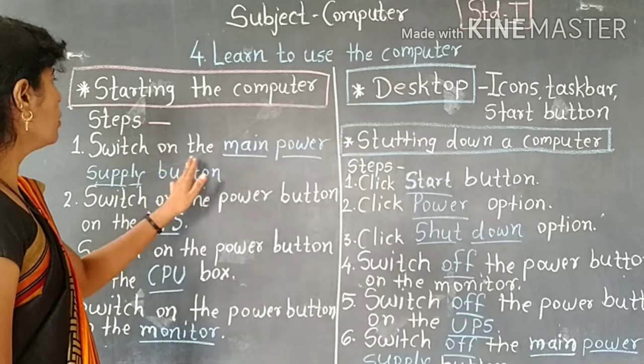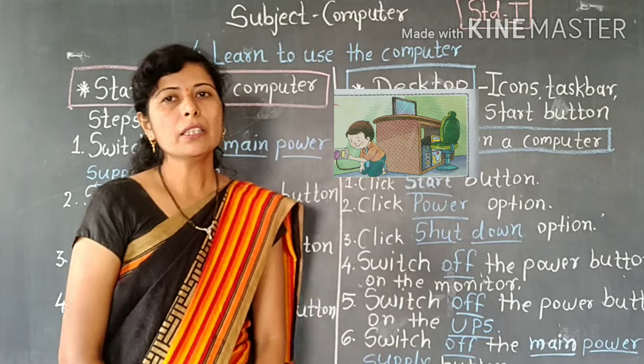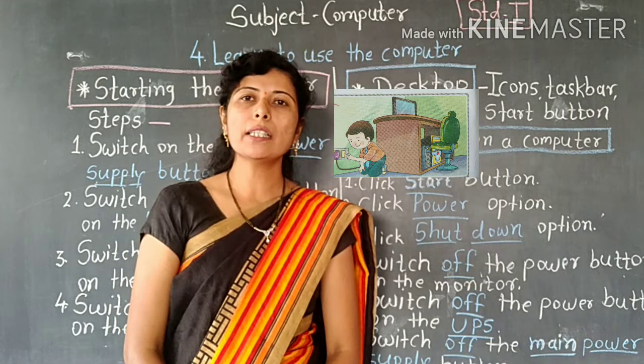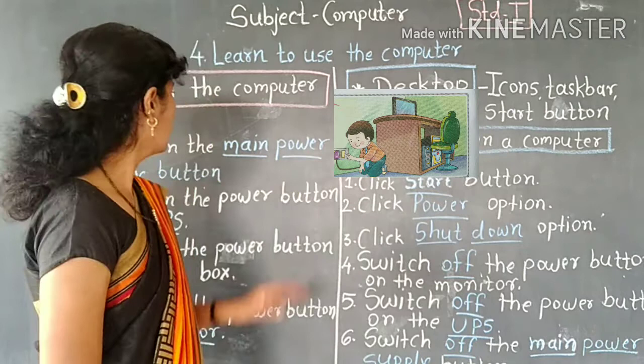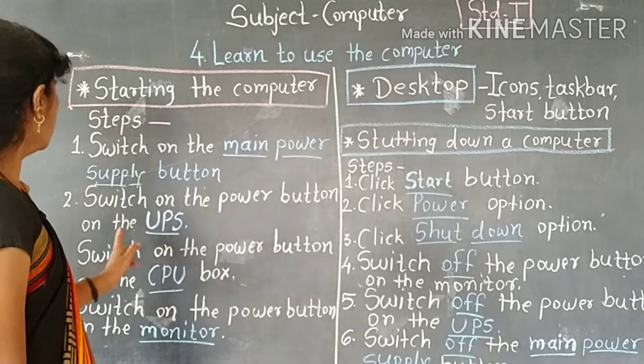The main power supply button means when electricity is passed — when you switch on the button, you have to start the main power supply button. Then the second step is to switch on the power button on the UPS.